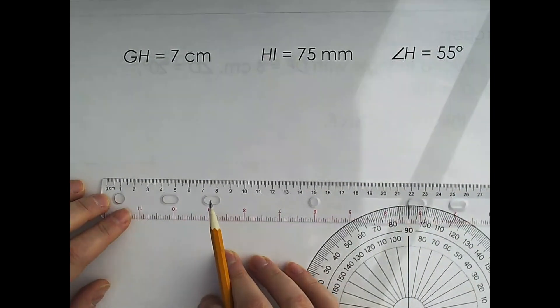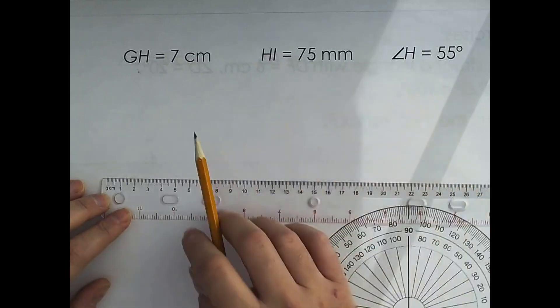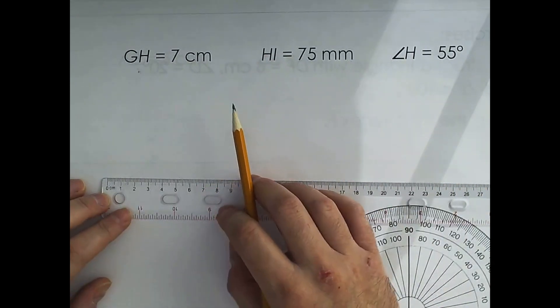I'm going to draw a triangle, and here are the dimensions that we have to use. The lengths, the angles.